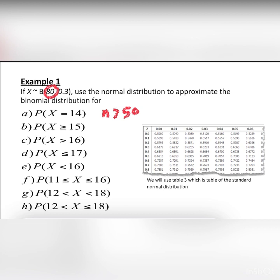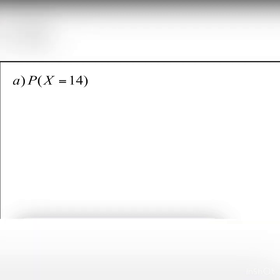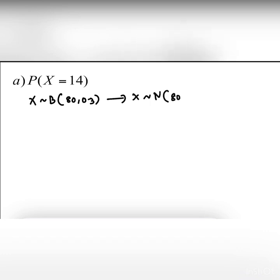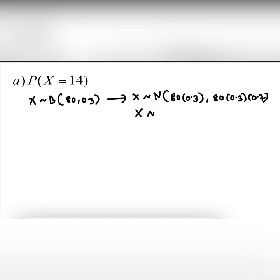Why do we have to approximate binomial to normal distribution? Because our n is greater than 50, so we have to do approximation. To get the mean μ, we compute n times p: 80 × 0.3 = 24. To get the variance, npq: 80 × 0.3 × 0.7 = 16.8. So X is normally distributed with mean 24 and variance 16.8.